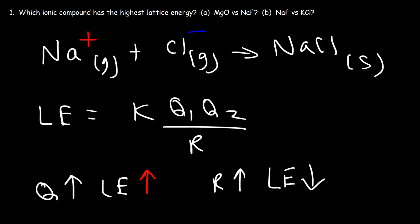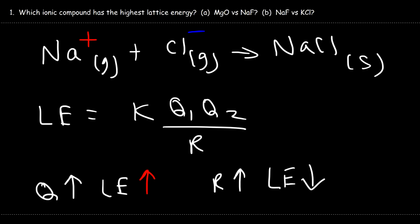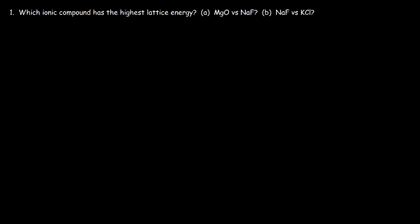Ions with larger charge values have greater lattice energy values. Ionic compounds that contain large ions will have small lattice energy values, whereas compounds that contain small ions will have large lattice energy values. To summarize: if you want to increase the lattice energy, you need to increase the charge and decrease the size of the ions.